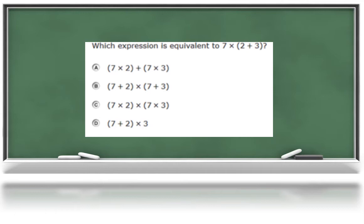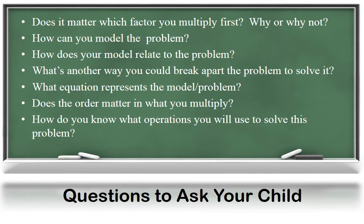Here's another example of a multi-step problem. Your child may be asked to solve: which expression is equivalent to seven groups of two increased by three? Your child should notice that A would give them the same result as the original expression. These questions can help to deepen your child's understanding of this unit. Does it matter which factor you multiply first? Why or why not? How can you model the problem? How does your model relate to the problem? What's another way you could break apart the problem to solve it? What equation represents the model or problem? Does the order matter in what you multiply? How do you know what operations you will use to solve this problem?